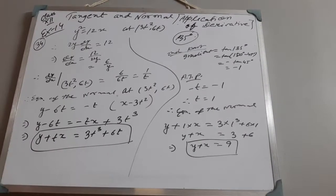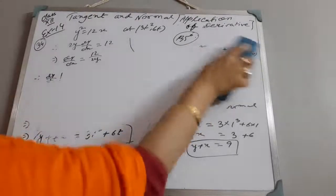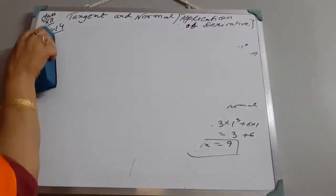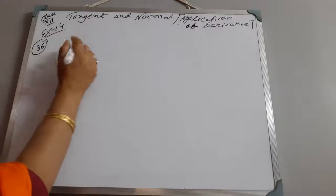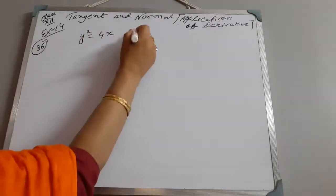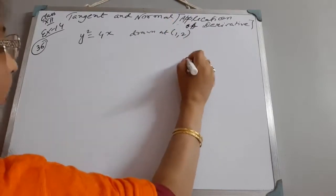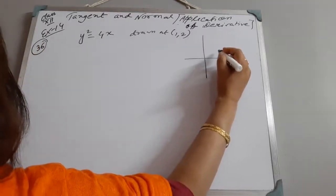Next, sum number 36. Find the length of the normal chord of the parabola y² = 4x drawn at point (1, 2). The normal chord of the parabola — let us understand what that means.